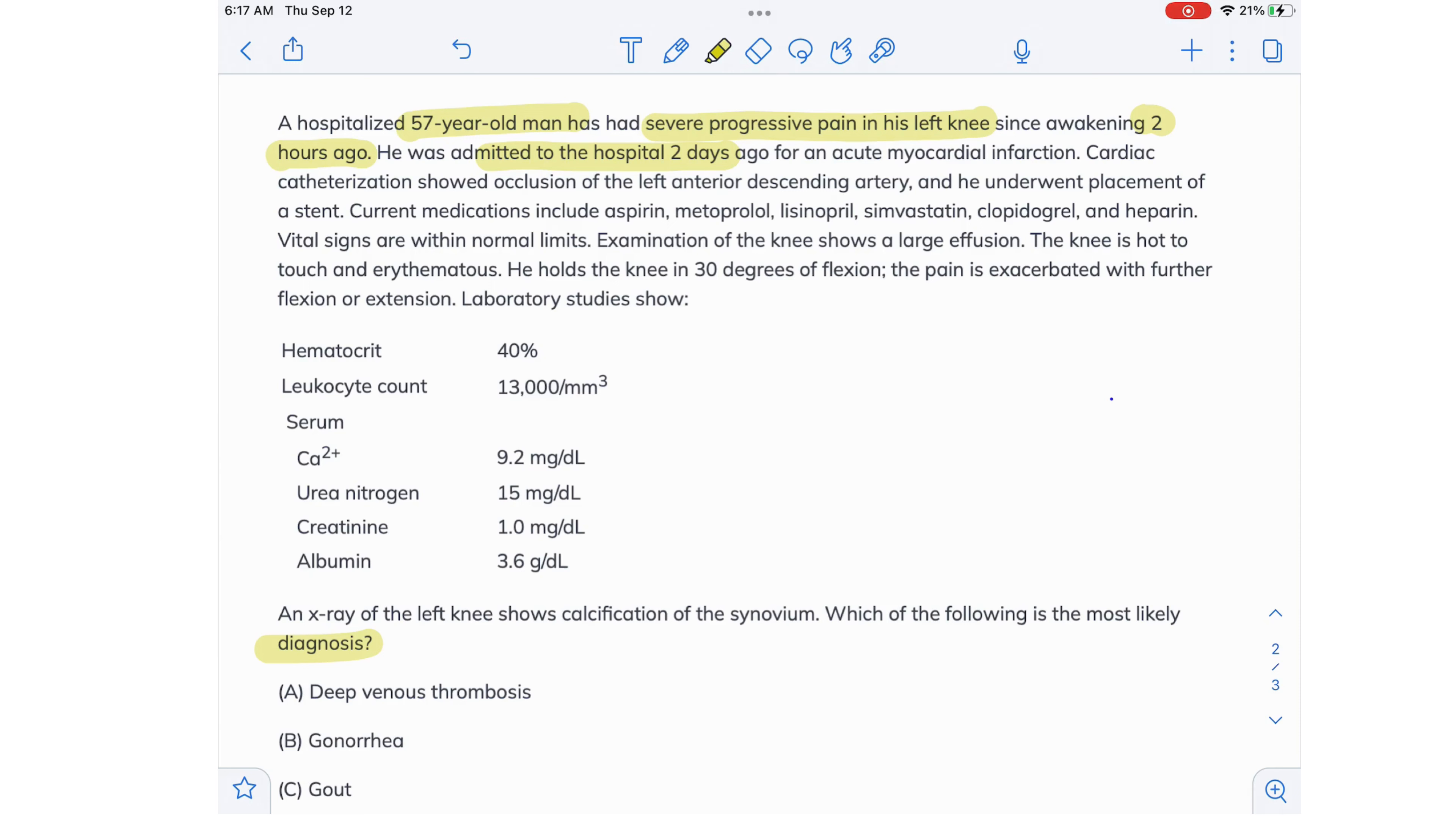Cardiac cath shows occlusion of the LAD and he underwent placement of a stent. Current meds include aspirin, metoprolol, lisinopril, simvastatin, clopidogrel, and heparin. Vital signs are within normal limits. Examination of the knee shows a large effusion. The knee is hot to touch and erythematous. He holds the knee in 30 degrees of flexion. The pain is exacerbated with further flexion or extension.